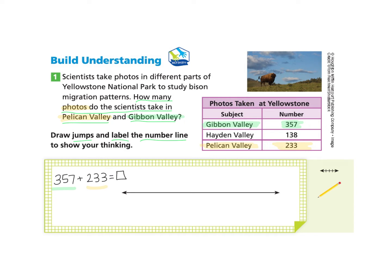Our problem is adding the photos from Gibbon Valley and Pelican Valley together. You may be thinking, why can't I just add these numbers together? And you would be right. But our job is to learn different strategies. We've been instructed to use the number line and make some jumps. I'm going to start with the biggest number, which is 357. That's our starting point, so we label the first point on our number line 357.